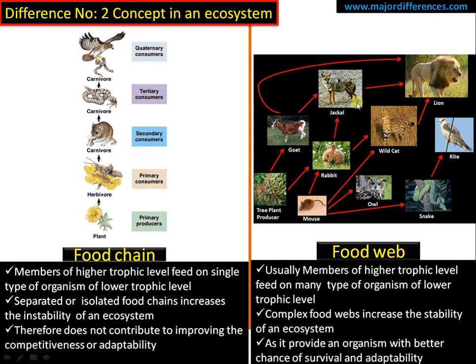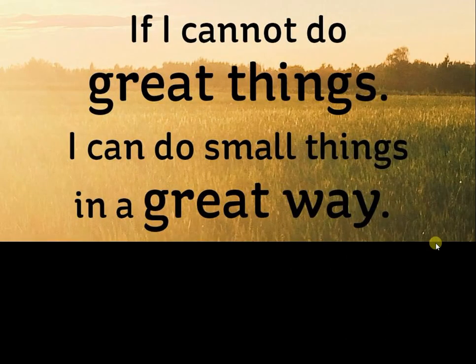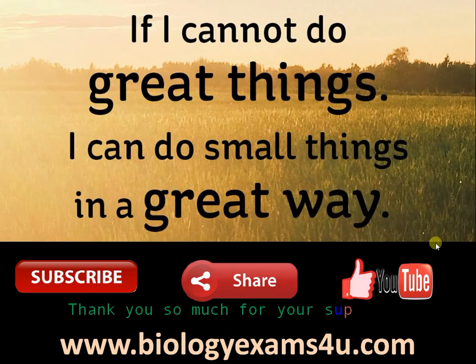The chance of survival is greater because this particular jackal can feed on many other organisms in the lower trophic level. So the more complex the food web, the more stability the ecosystem will have. Hope things are clear. Thank you so much for your support — this is biologyexams4u.com.